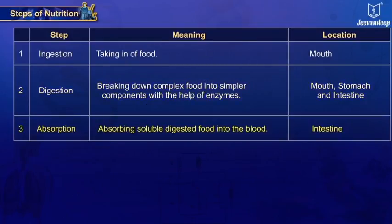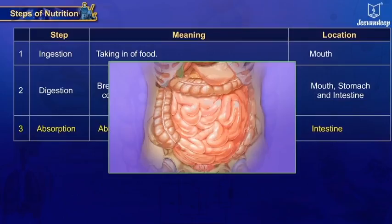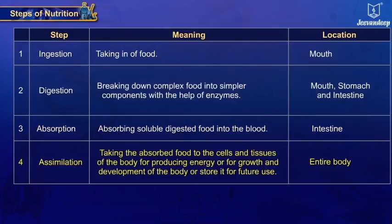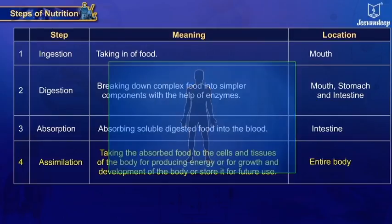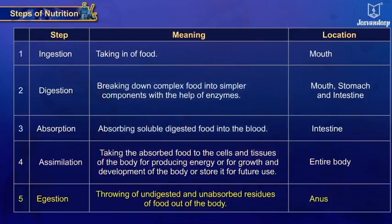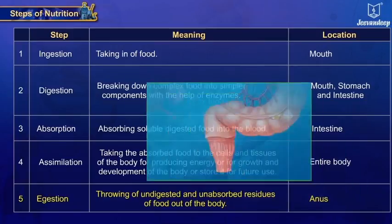Step 3: Absorption — absorbing soluble digested food into the blood; location: intestine. Step 4: Assimilation — taking the absorbed food to the cells and tissues of the body for producing energy, or for growth and development, or storing it for future use; location: entire body. Step 5: Egestion — throwing undigested and unabsorbed residues of food out of the body; location: anus.